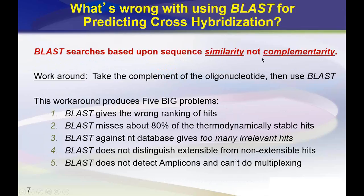Because BLAST cannot search for sequence complementarity, people will commonly use a workaround: take the complement of the oligo of interest and then use BLAST to find similarities to that complement. That procedure leads to at least five problems, and we're going to elucidate each one and why they're problematic.